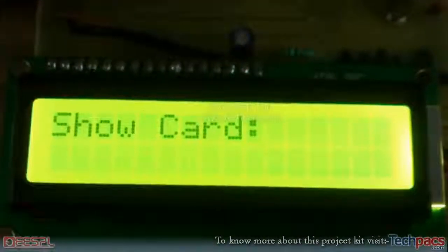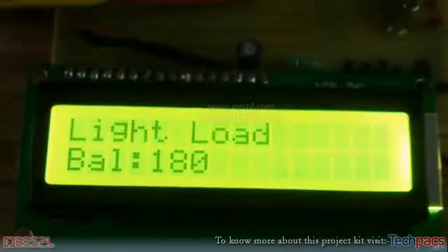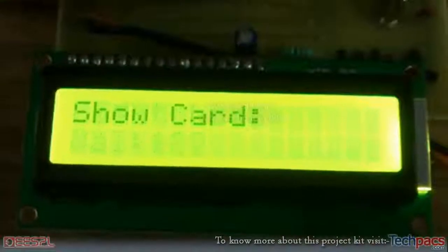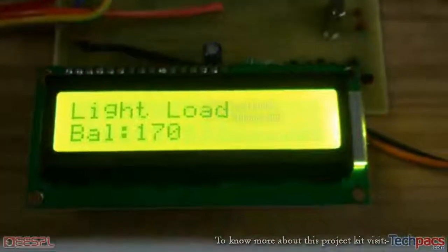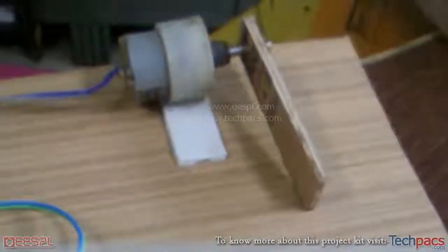...passing the same card again. Here it goes, 10 rupees deducted again. You can see the barrier opening and closing.